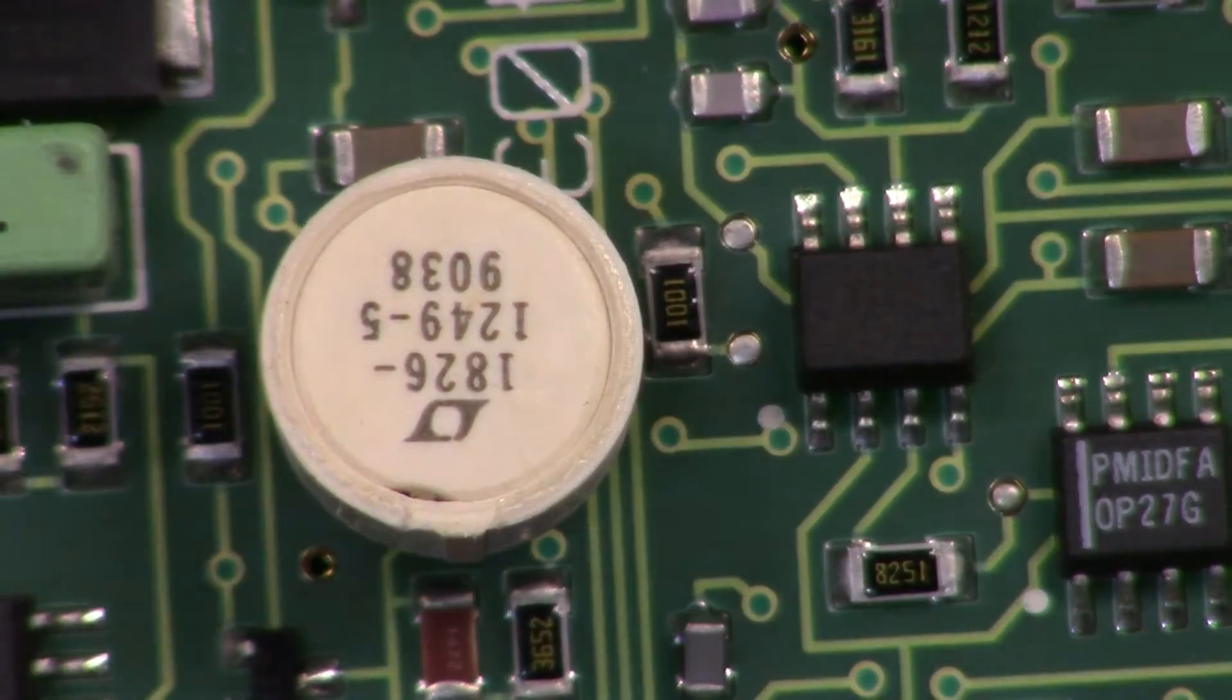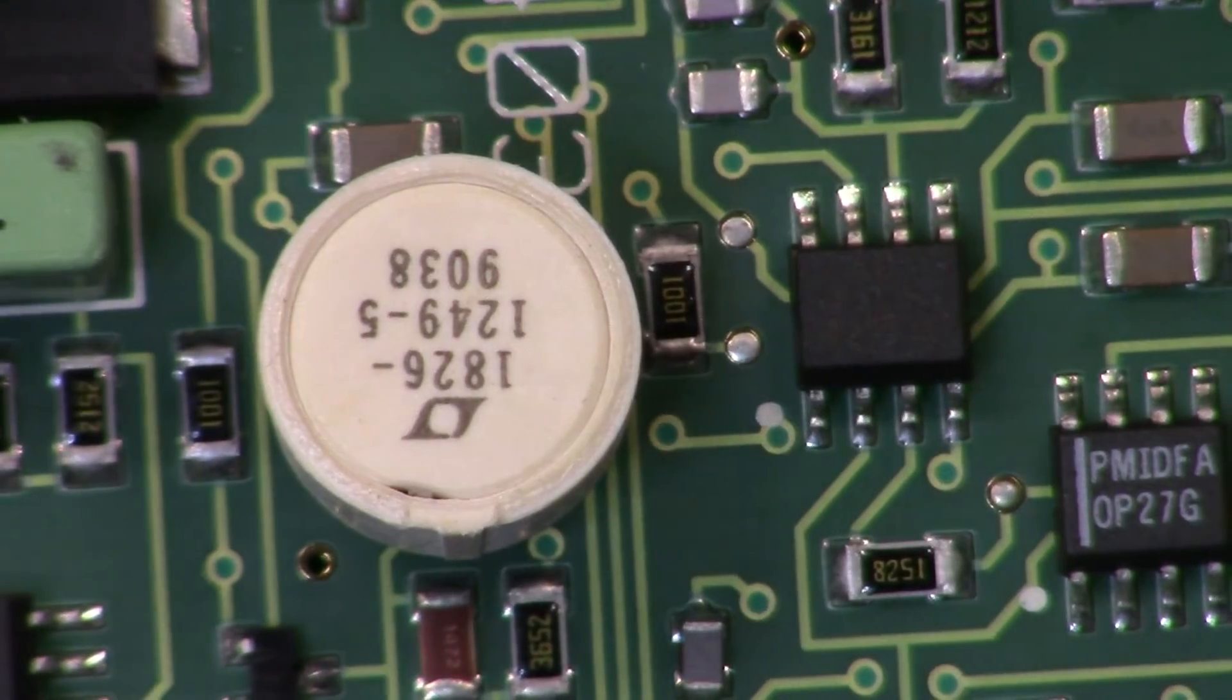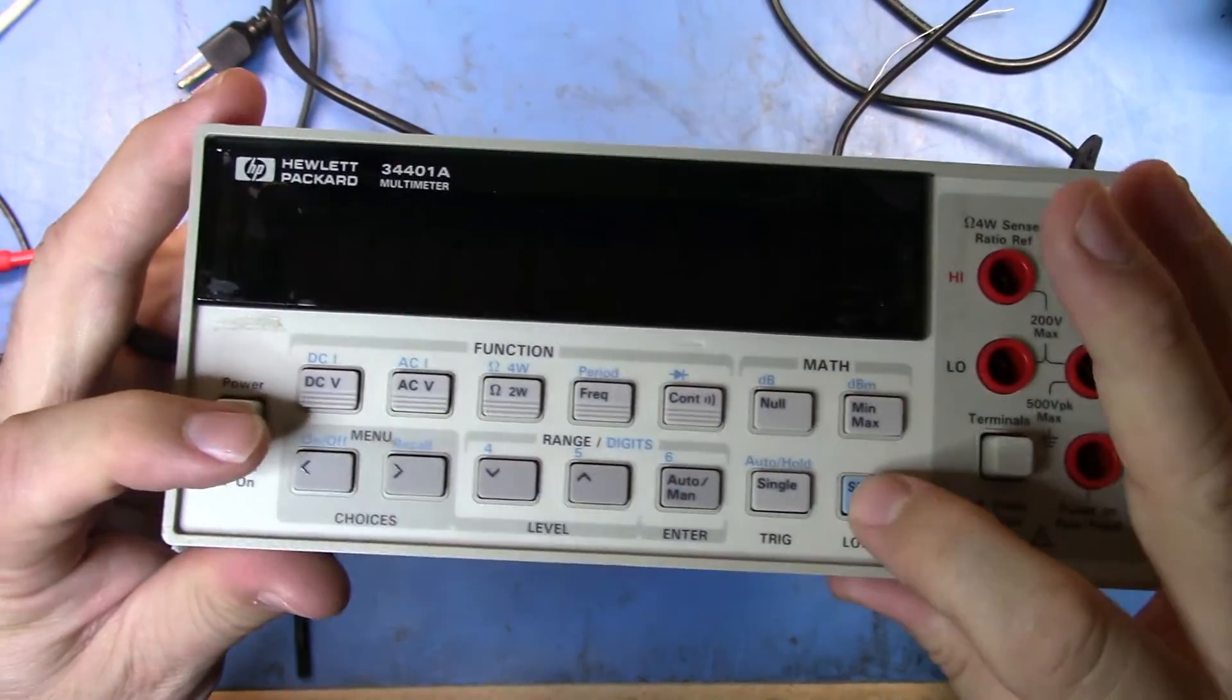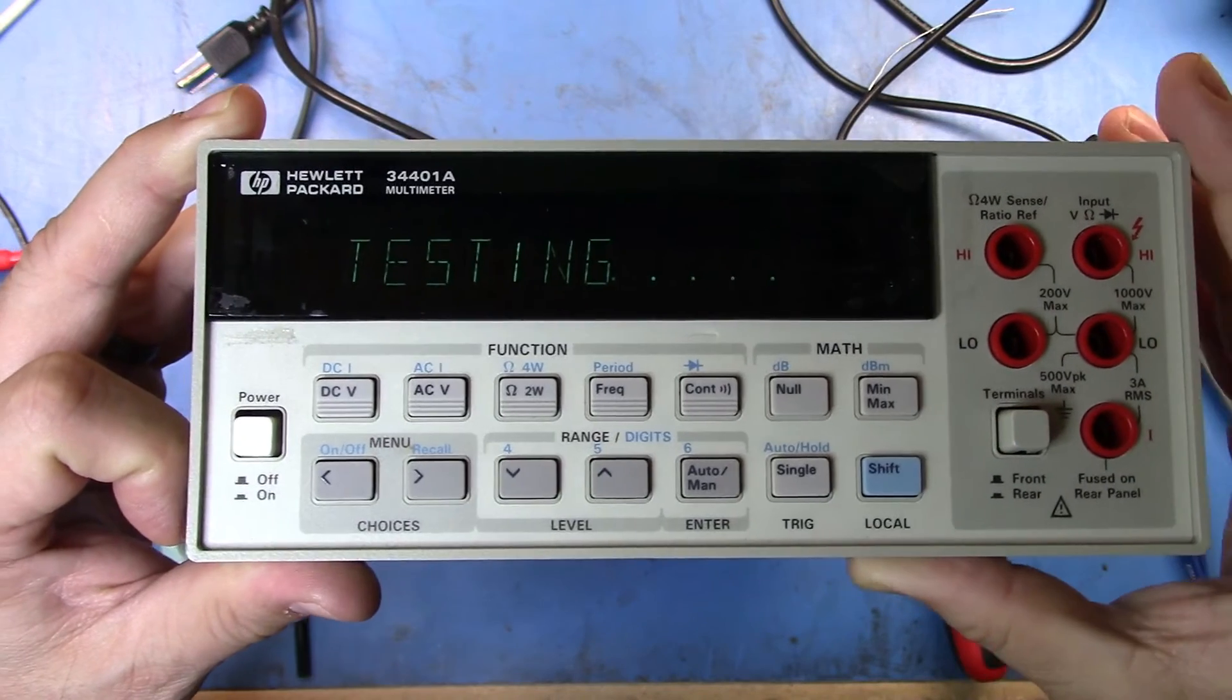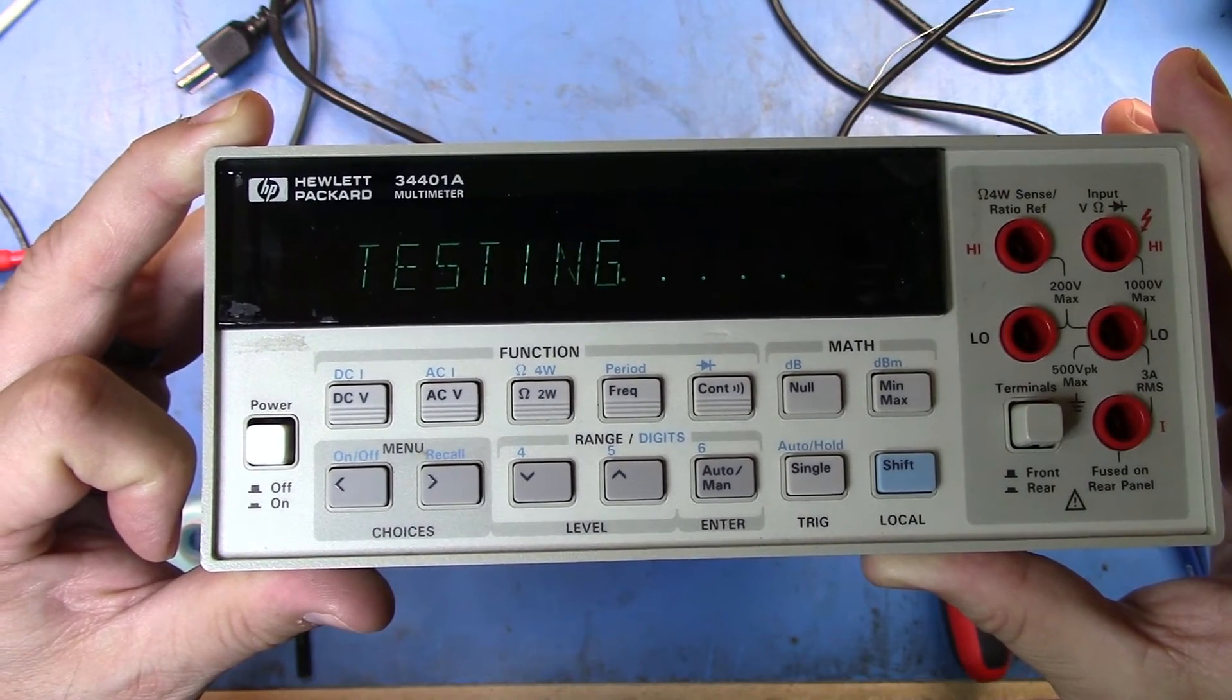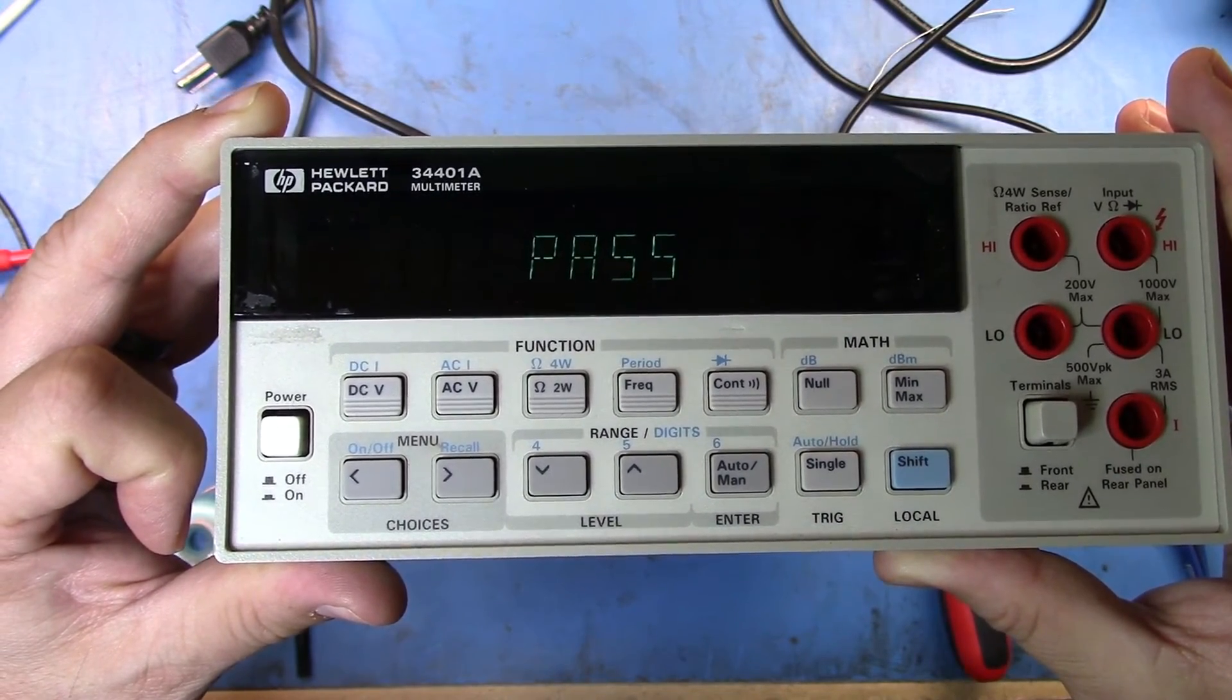So now, let's go ahead, we don't need to turn the signal generator on because we can actually pass the self test. Let me plug this in here. Let me zoom this out. Let's turn this around and hold this down. Now turn this on. And there we go. Nice little pass.